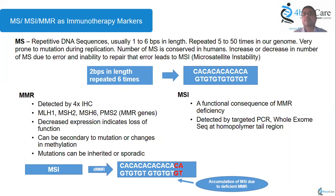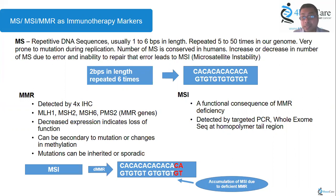Another immunotherapy marker is Microsatellite Instability. Humans have a stretch of DNA in our genome also known as the homopolymer region, which is very prone to mutations. If there's a stretch of repeating nucleotides like CACA CACA, any detection method may make errors evaluating that region. Microsatellites are repetitive DNA sequences, usually one to six base pairs in length, repeated five to fifty times in our genome, and are very prone to mutations during the replication process.